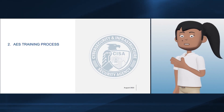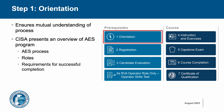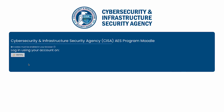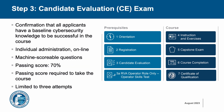Let's review the AES training process. The AES training process consists of seven steps, divided into two areas: prerequisites and course. AES requires all applicants to review this video and slides as their orientation to the program. After reviewing, visit the Moodle Learning Management System, or LMS, and register for an AES training account. Consult the AES Moodle Quick Start Guide for Registration and other LMS instructions. To confirm that you have a baseline cybersecurity knowledge to be successful in an AES course, you must complete and pass the Candidate Evaluation, or CE exam. You have three attempts to pass the multiple choice question test with a score of 70% or higher.